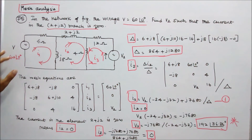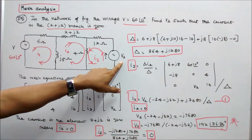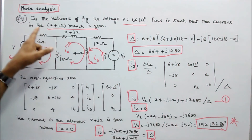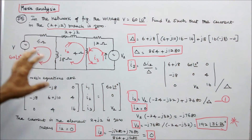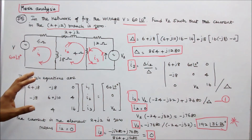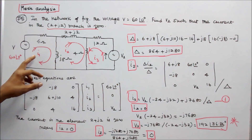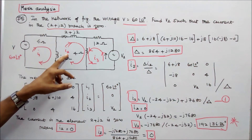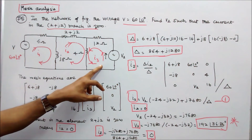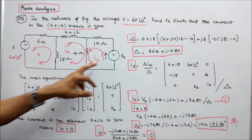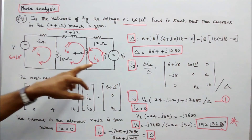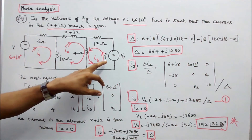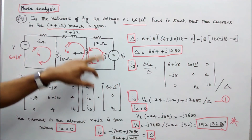Problem number five: Given V = 60 angle zero, find V2 such that the current in the 2 + j2 branch is zero. The circuit has three loops with currents i1, i2, and i3. Loops 1 and 2 have clockwise directions; for loop 3, the direction is specified as anti-clockwise.